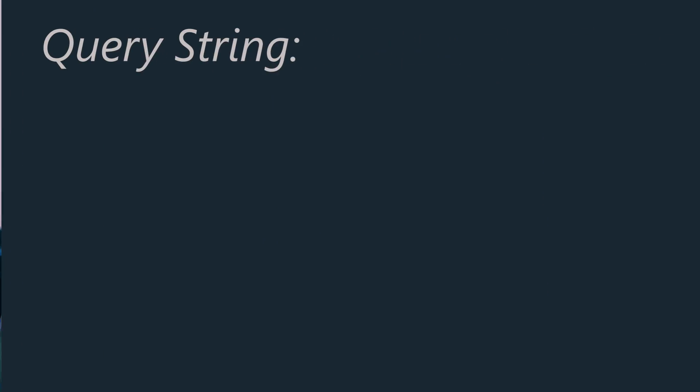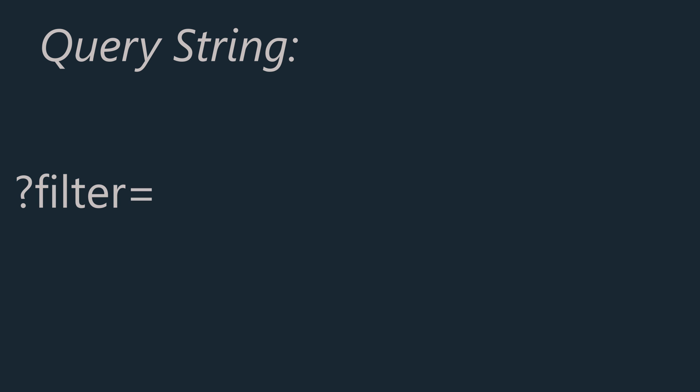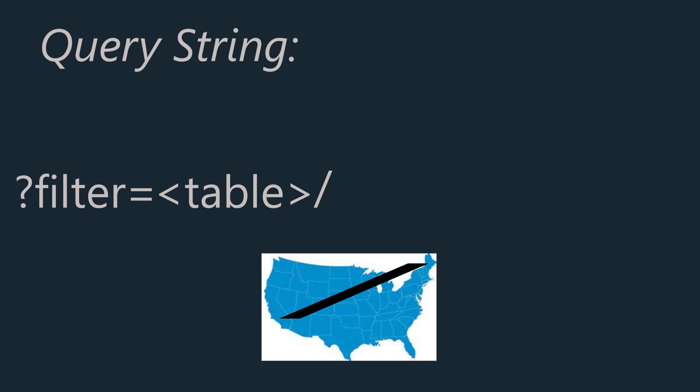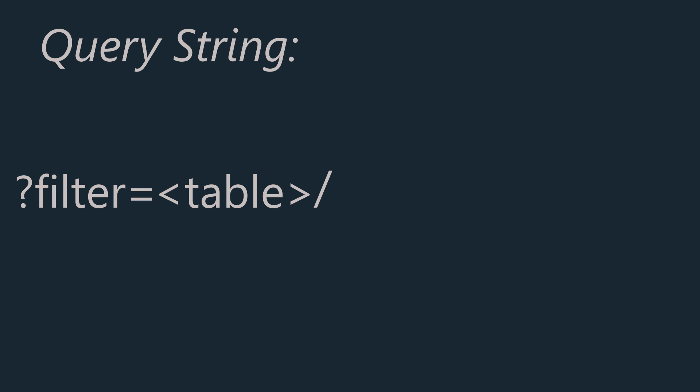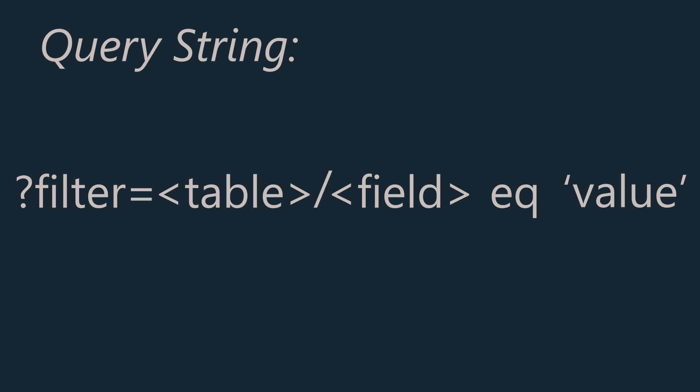First, you're going to need to go get that report URL, and then you're going to put question mark filter equals. The format is going to be table forward slash, then the field name that you're interested in, space EQ for equals, space, and then in single quotes, the actual string that you want to filter on. There's no setting that you need to turn on to enable this — it should work for any report and any field in your dataset.